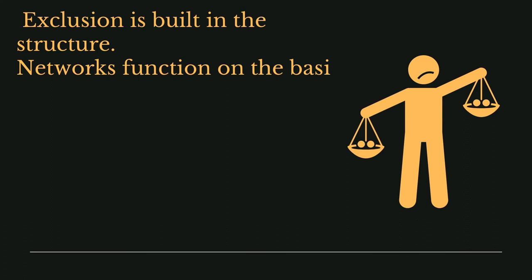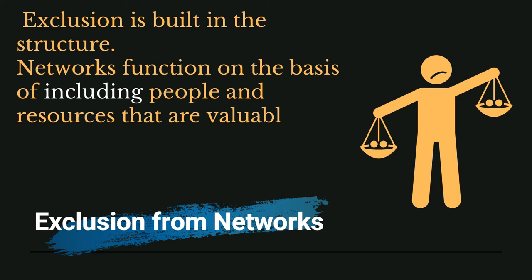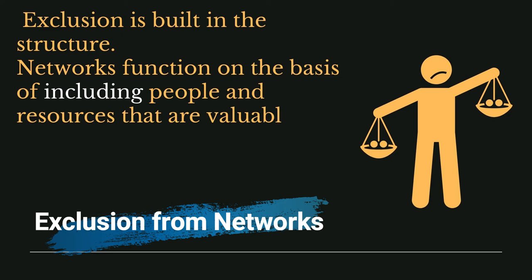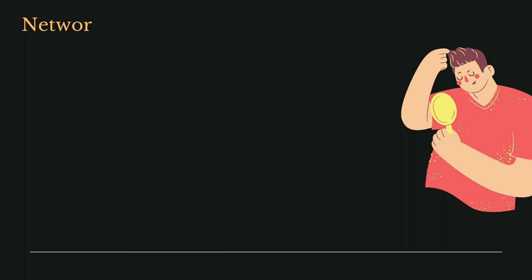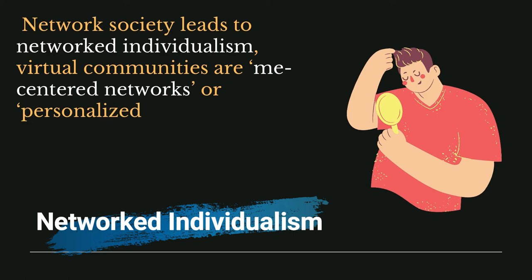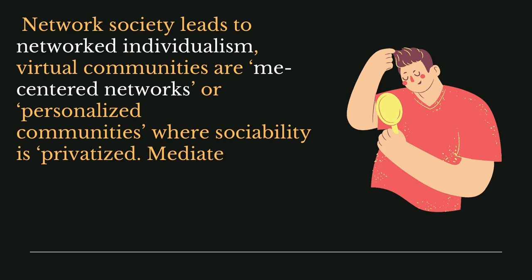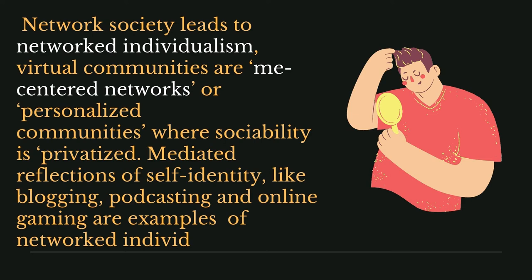Exclusion is built into the network society's structure. Networks function on the basis of including people and resources that are valuable to their task, and excluding other people, territories, and activities that have little or no value. The network society also leads to networked individualism — virtual communities are me-centered or personalized communities where sociability is privatized. Mediated reflections of self-identity like blogging, podcasting, and online gaming are examples of networked individualism.